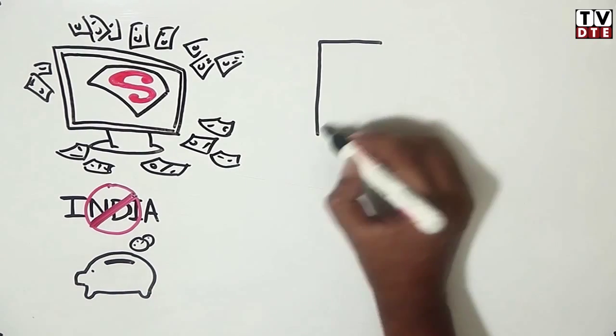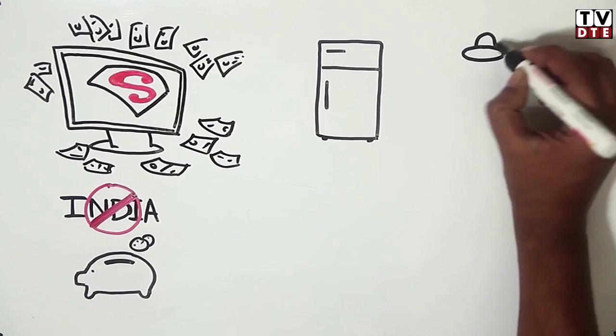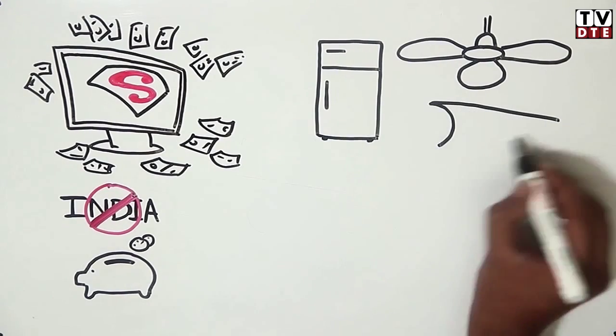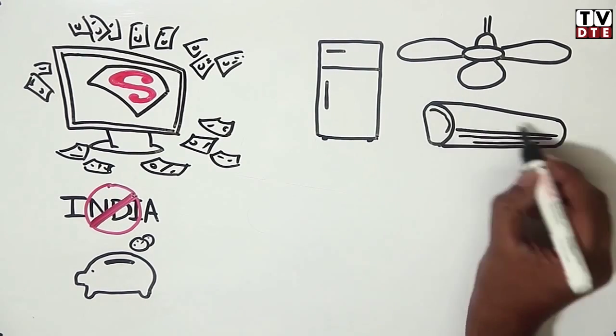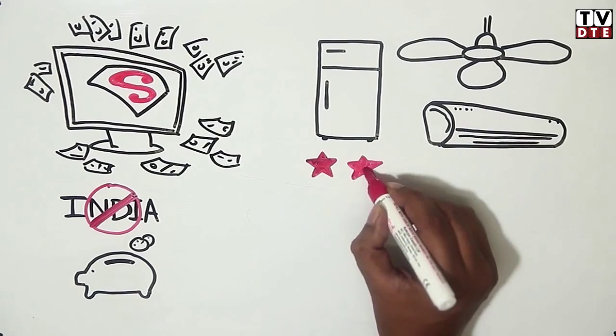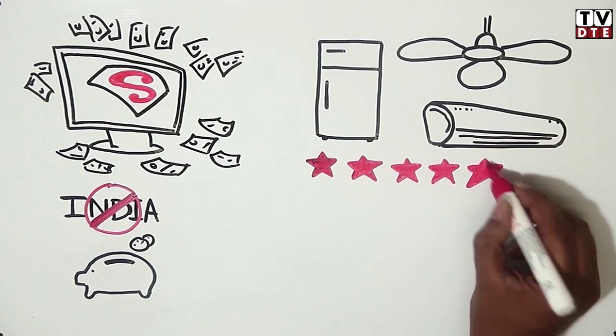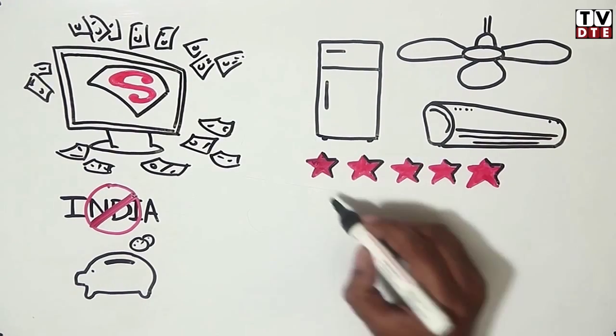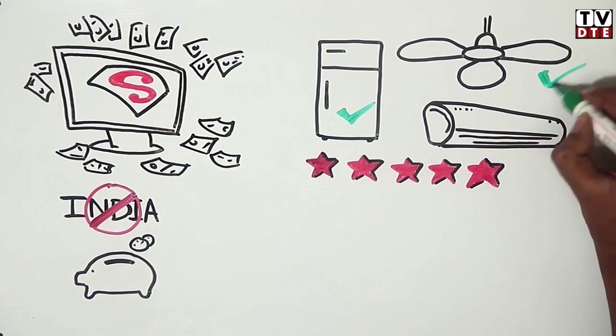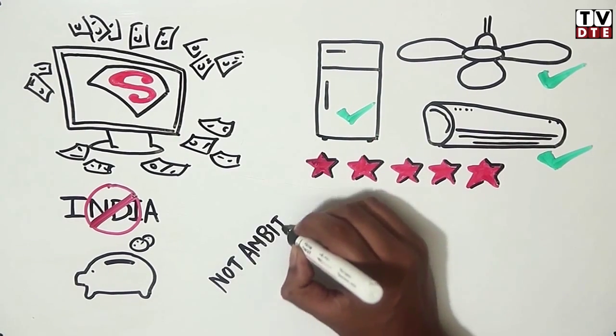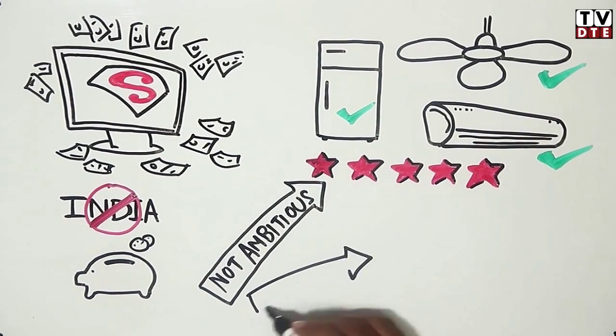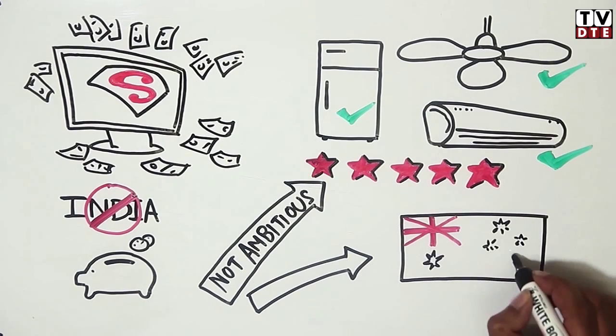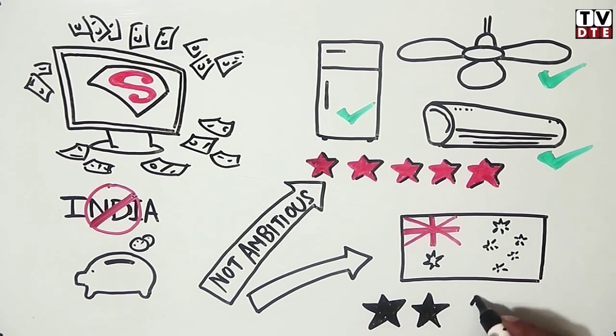India does have a mandatory energy efficiency rating for refrigerators, fans, and air conditioners, where stars are awarded based on power frugality. A five-star device consumes less power than its three-star counterpart. But this rating program is not as ambitious as it should be. For example, a five-star device will only get a rating of 2.5 stars in Australia.